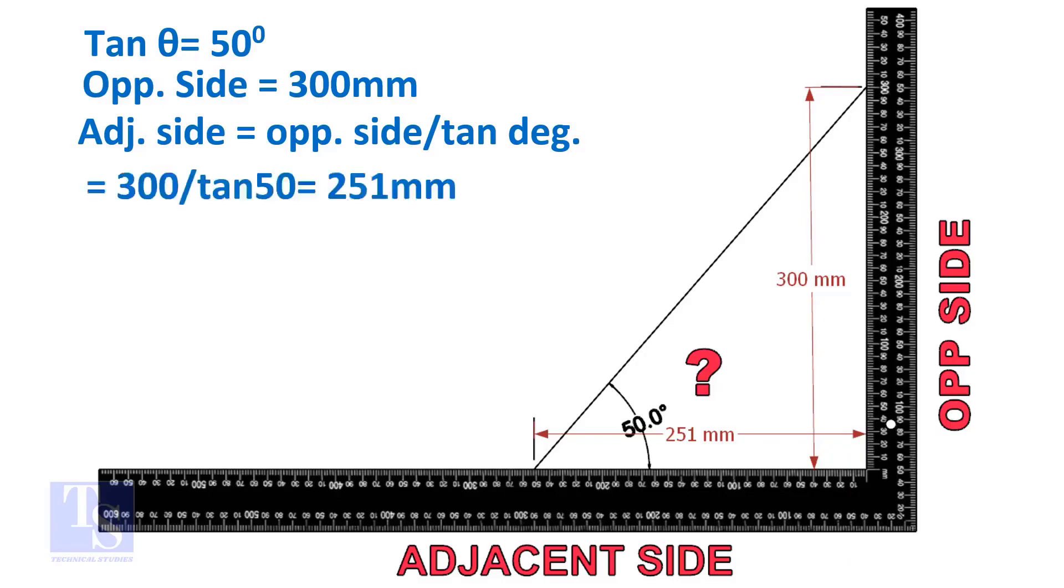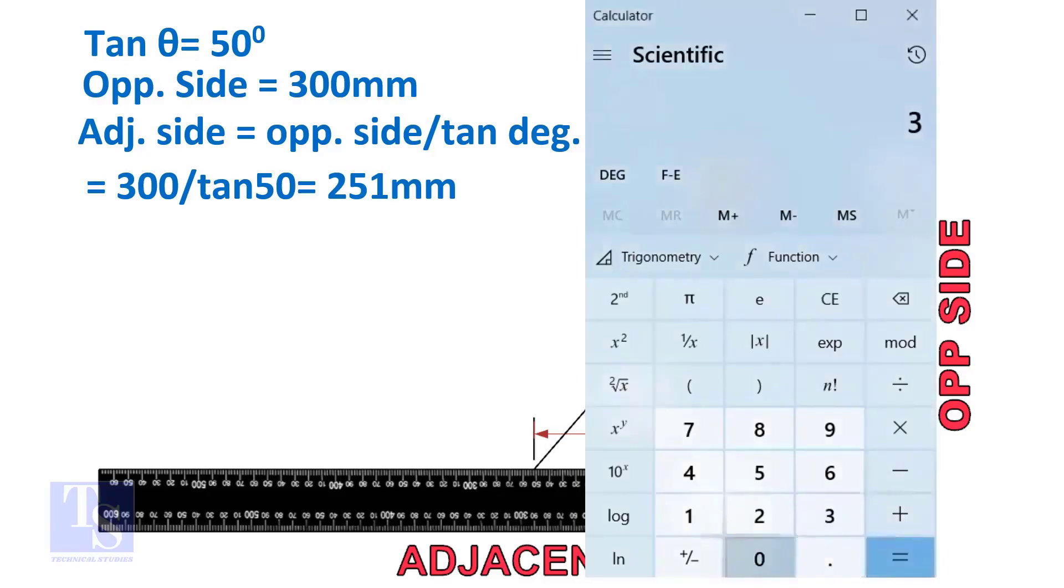Adjacent side is equal to 300 divided by TAN 50 degree. Let us calculate.